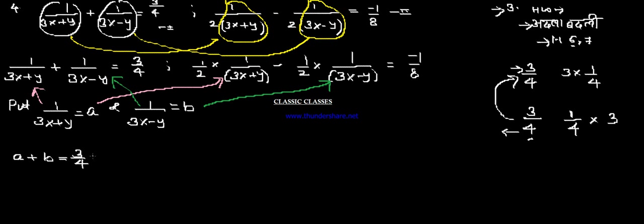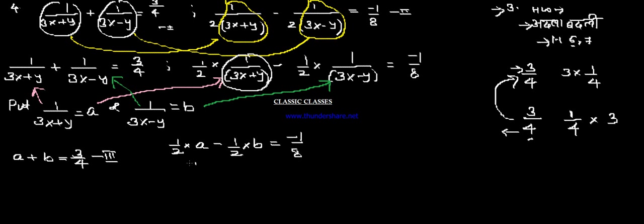And for the second substituted equation, we get 1 by 2 into a, minus 1 by 2 into b, equals minus 1 by 8. After multiplication this looks like a by 2 minus b by 2 equals minus 1 by 8 — equation number 4. Now we can simplify these equations since there are fractions.